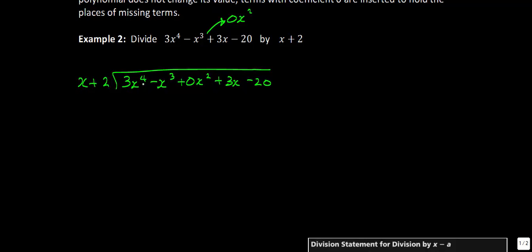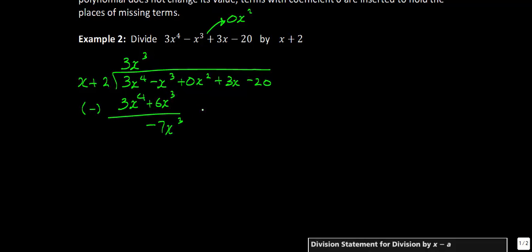What do you have to multiply x by in order to get 3x to the 4th? We're going to multiply it by 3x cubed. 3x cubed times x gives you 3x to the 4th, and 3x cubed times 2 gives you positive 6x cubed. We're going to subtract. If we take negative x cubed and subtract the 6x cubed, we're left with negative 7x cubed. We bring down our next term — the 0x squared that we put in for the missing term.